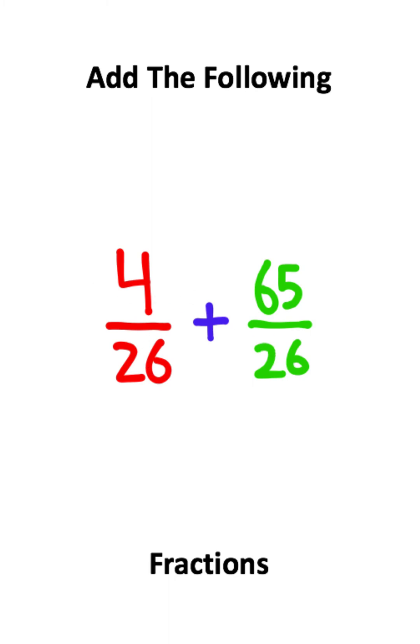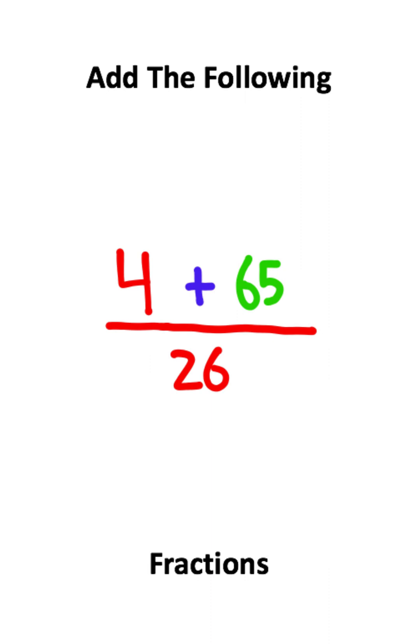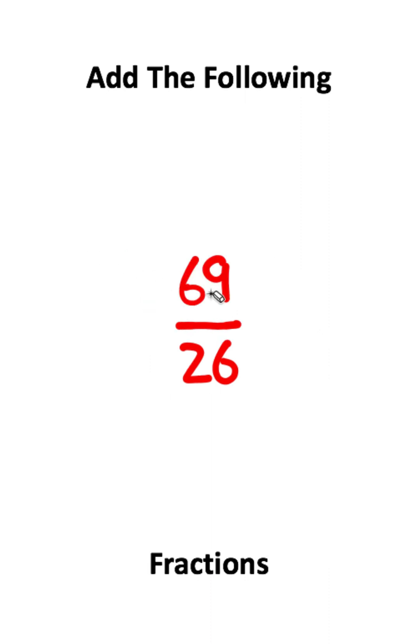And now I have equal denominators, which means I can set this as the common denominator. Four plus sixty-five is sixty-nine, and this fraction does not reduce any farther, which means this fraction is the answer to this problem.